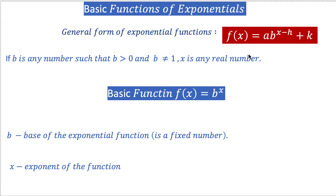The most basic form of an exponential function is f(x) = b^x. 'b' can be any number such that b is greater than 0 and b should be different from 1, and x is any real number. So 'b' is the base — a fixed number, it can be 2, 3, 4, or any valid value — and x is the exponent of the function.